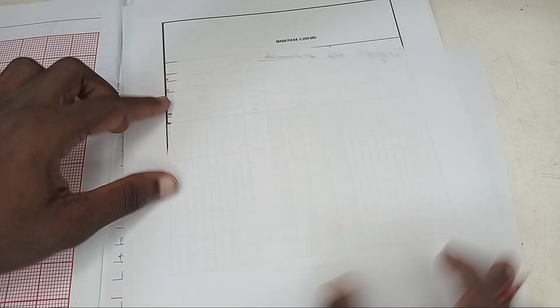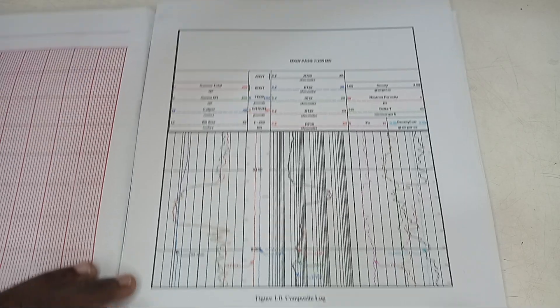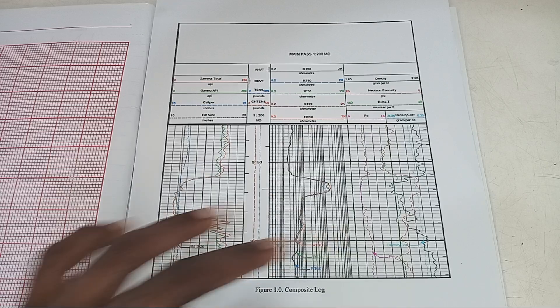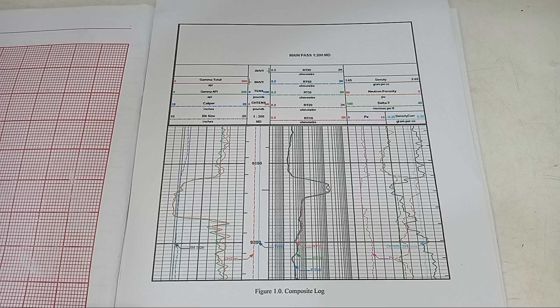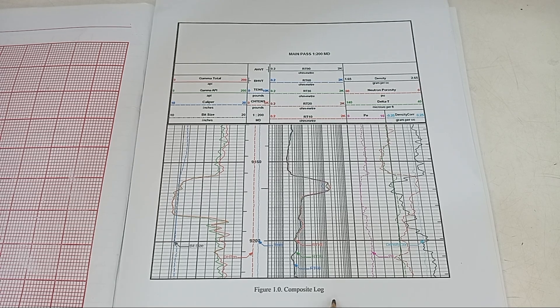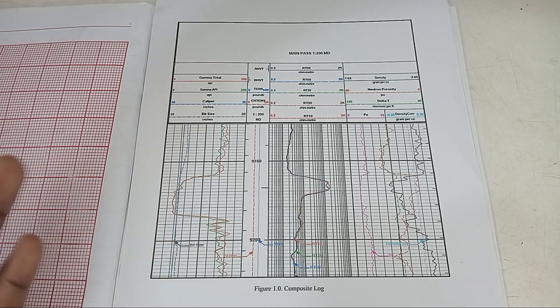Now we are going to look at how to interpret our logs. After sending gamma rays into the borehole, you get a result that might be kind of confusing at first. What you see here are logs — there is more than one log. This is called a composite log, and this composite log is composed of four to six logs.